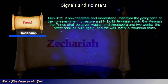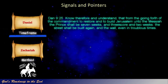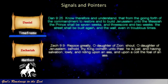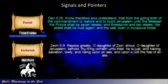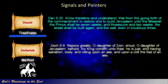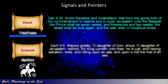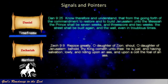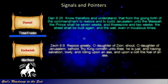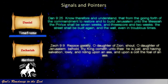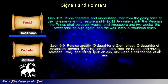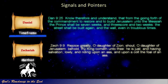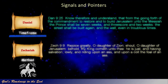In Zechariah 9 we find a description of how Israel's Messiah would present himself to his chosen nation. Zechariah 9 verse 9: 'Rejoice greatly, O daughter of Zion, shout, O daughter of Jerusalem, behold, thy king cometh unto thee. He is just, and having salvation, lowly, and riding upon an ass, and upon a colt, the foal of an ass.'